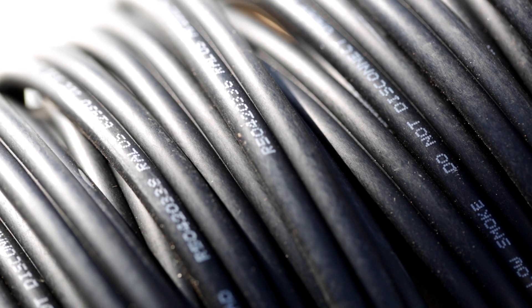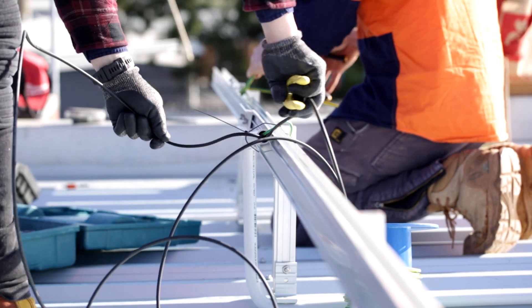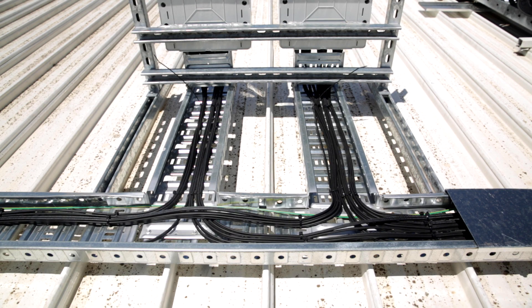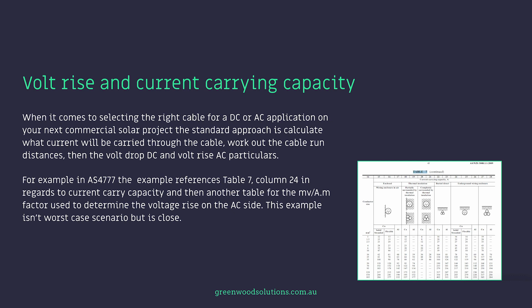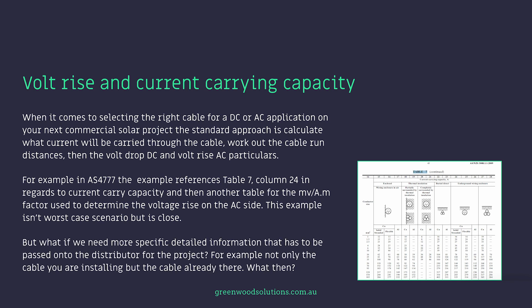When it comes to selecting the right cable for a DC or AC application on your next commercial solar project, the standard approach is to calculate what current will be carried through the cable, work out the cable run distances, then the volt drop on the DC and the volt rise AC particulars. For example, in AS4777 the reference is table 7 column 24 for current carrying capacity and another table for the millivolt per amp metre factor used to determine the voltage rise on the AC side. But what if we need more specific detailed information that has to be passed on to the distributor for the project — not only the cable you're installing but the cable already there?